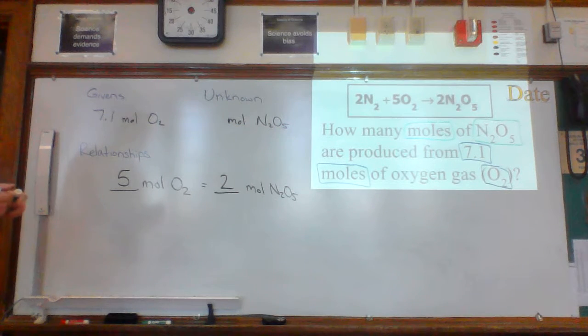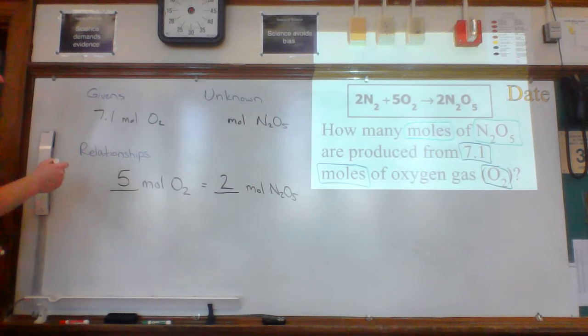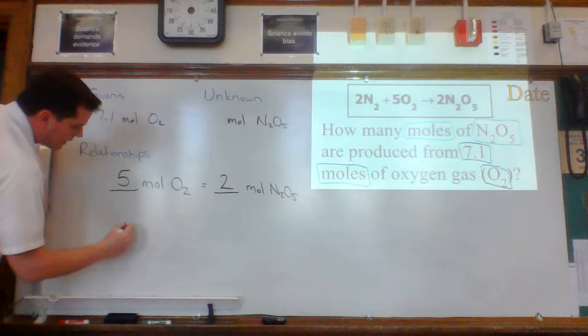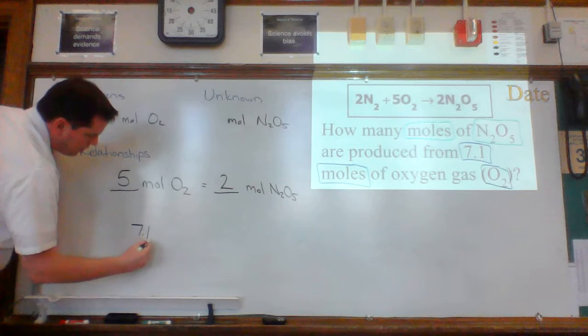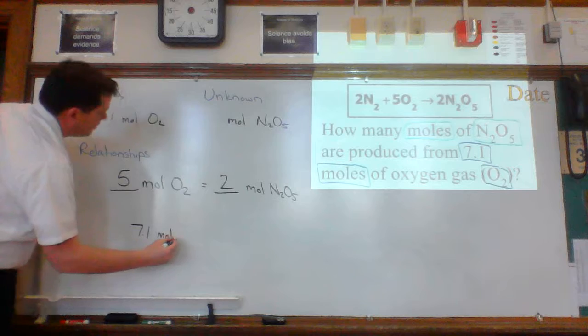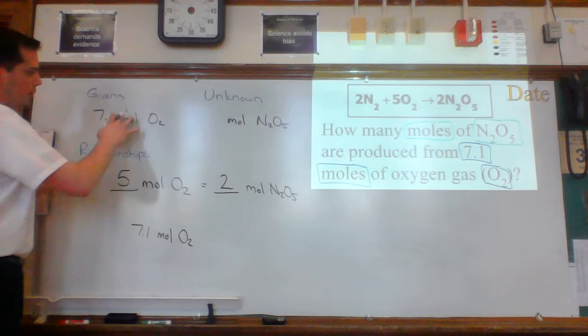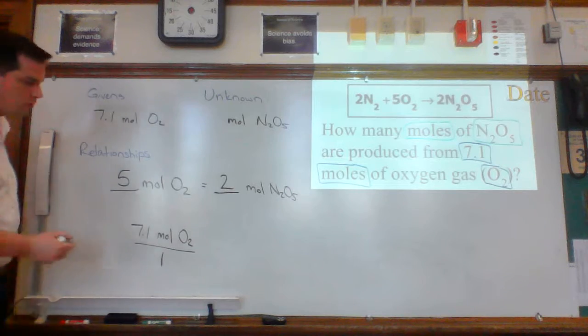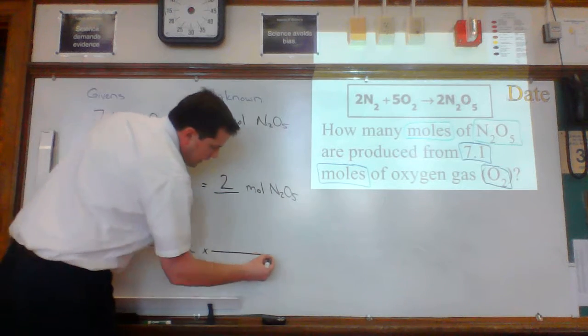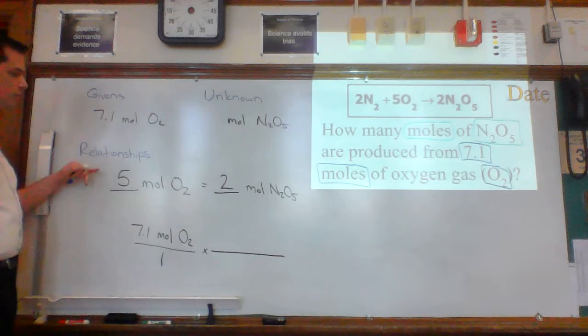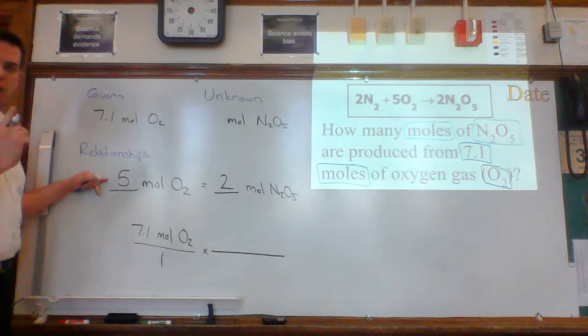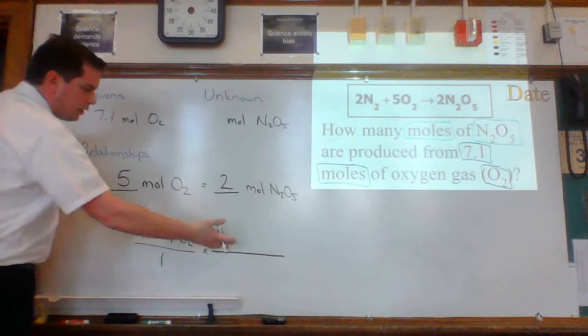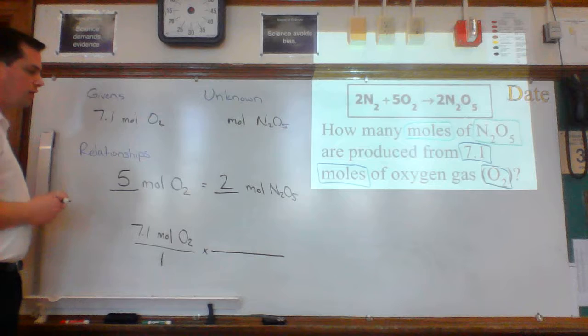We're ready to go ahead with our fractions. We have one fraction for the given. 7.1 moles O2. I just copy it straight down. You can put it over one if you wish. Times. I need another fraction. One fraction for each relationship. I only have one relationship, so I only need one extra fraction. Two fractions all together.